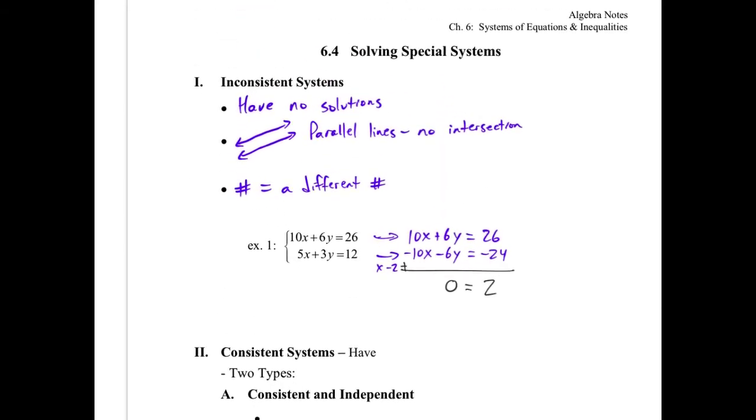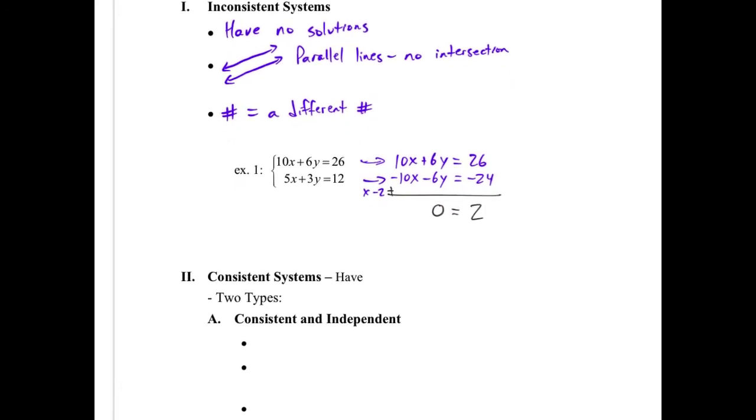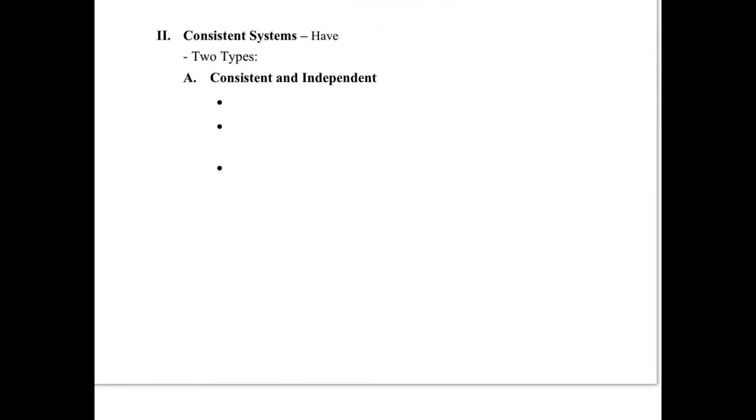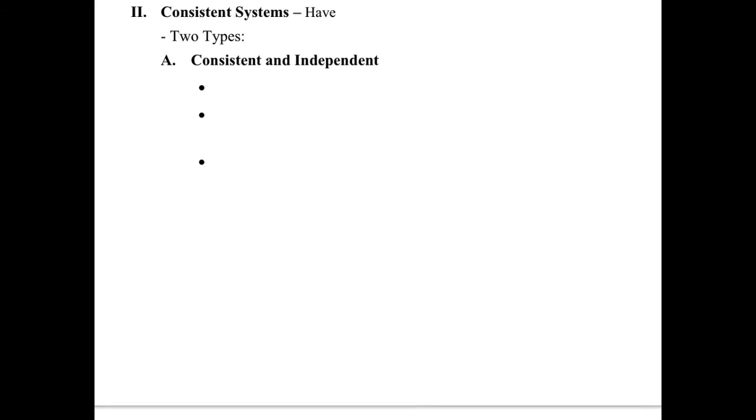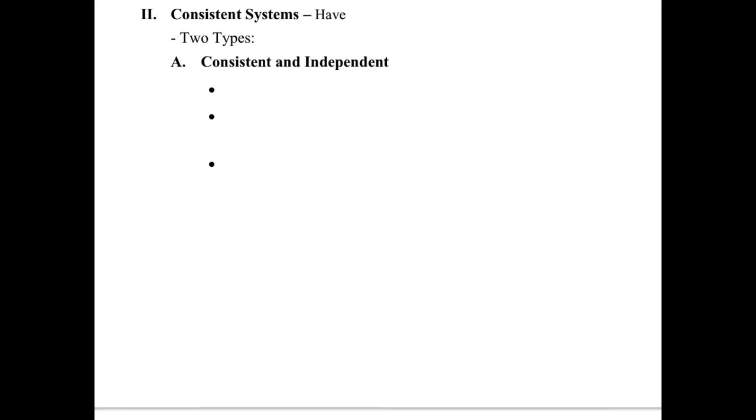Number equals a different number. Parallel lines. They never meet. There's no solutions. Officially, the name for that is that it's an inconsistent system, but you don't need to know the name as far as I'm concerned. All right. So consistent systems. This is where we're going to have two types.